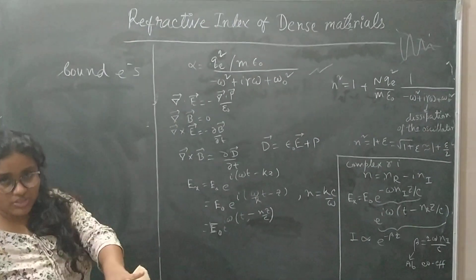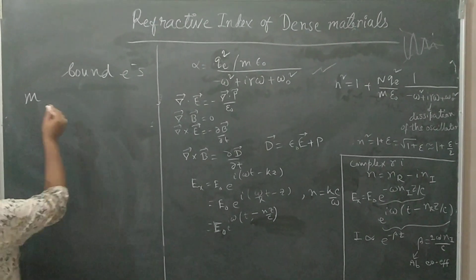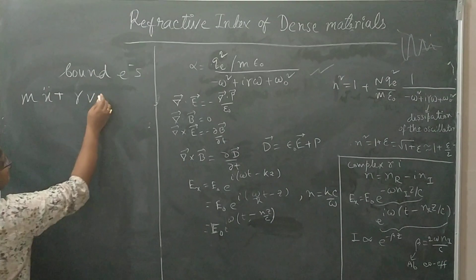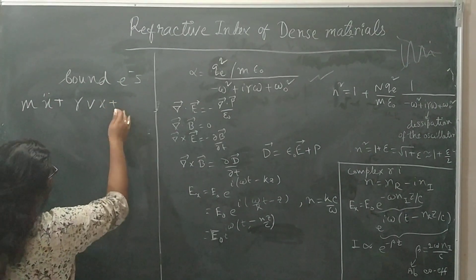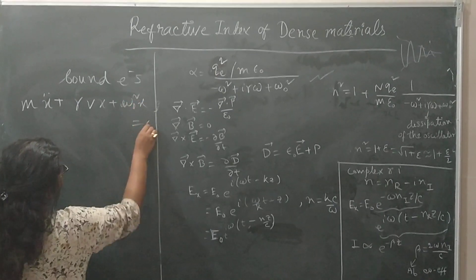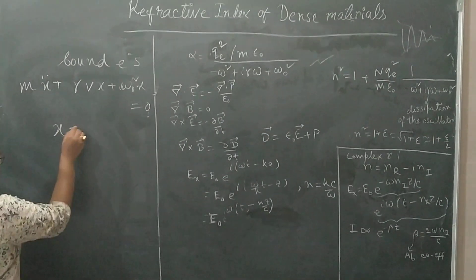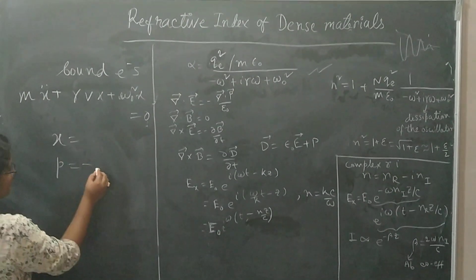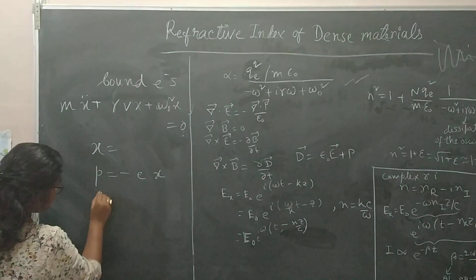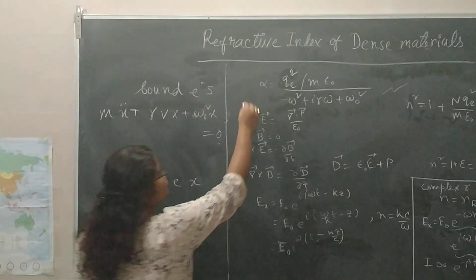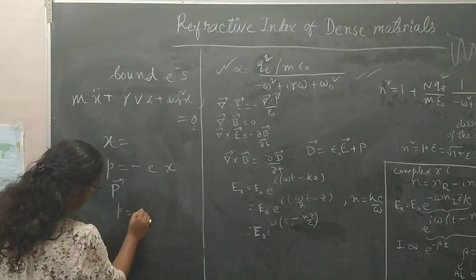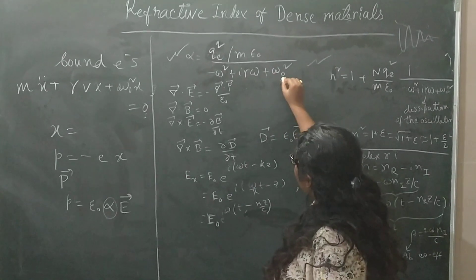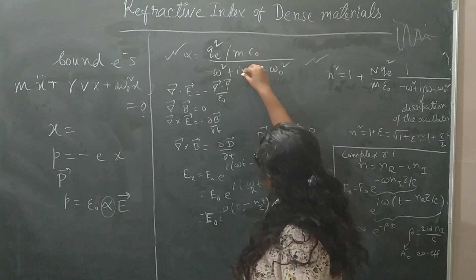This oscillation is a forced vibration, where I can write the equation of motion of the electron as: x double-dot plus a damping term gamma times x-dot plus omega_naught squared times x equals zero. Whenever you solve for the displacement x, you get the dipole moment as minus e times x, where e is the electronic charge and x is the displacement. Then you get the polarization and the polarizability alpha, where P equals epsilon_naught times alpha times E. From there you get alpha in terms of omega: q squared over m·epsilon_naught divided by (minus omega squared plus i·gamma·omega plus omega_naught squared).